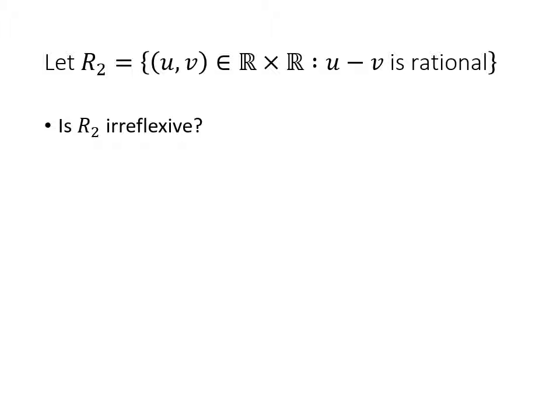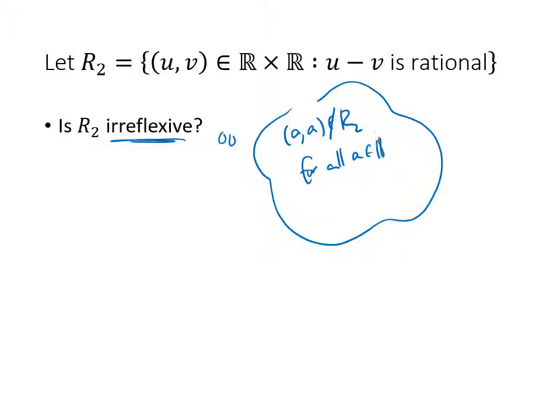The tendency here is to think that the word irreflexive just means not reflexive, but that's not what it means. When we think about irreflexive, what we're saying is that (a, a) is not in my relation for all a, in this case in the real numbers. What we're saying here is that this relation should contain no pairs where the first number and the second number are the same. It should contain absolutely zero of those. Irreflexive means it has zero of those double pairs.